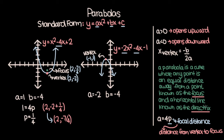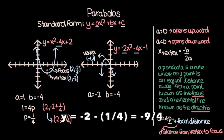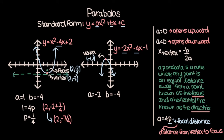The directrix is a horizontal line that's always outside the parabola. If your parabola opens upward, the directrix is below it; if it opens downward, the directrix is above it. Since any point on the parabola must be an equal distance from the focus and the directrix, and the focus is one fourth above the vertex, the directrix must be one fourth below it. The vertex has y-coordinate negative 2, so the directrix has the equation y equals negative nine fourths. For any point along the curve, the distance to the focus equals the distance to the directrix.